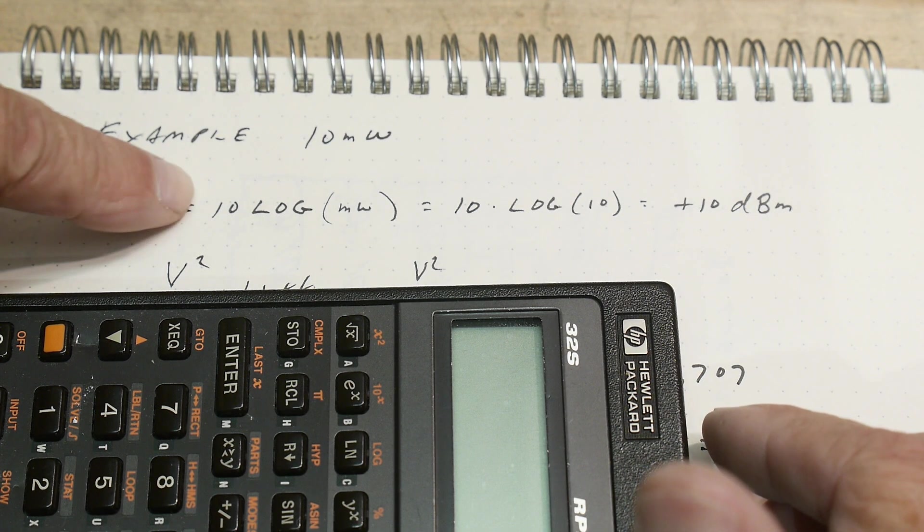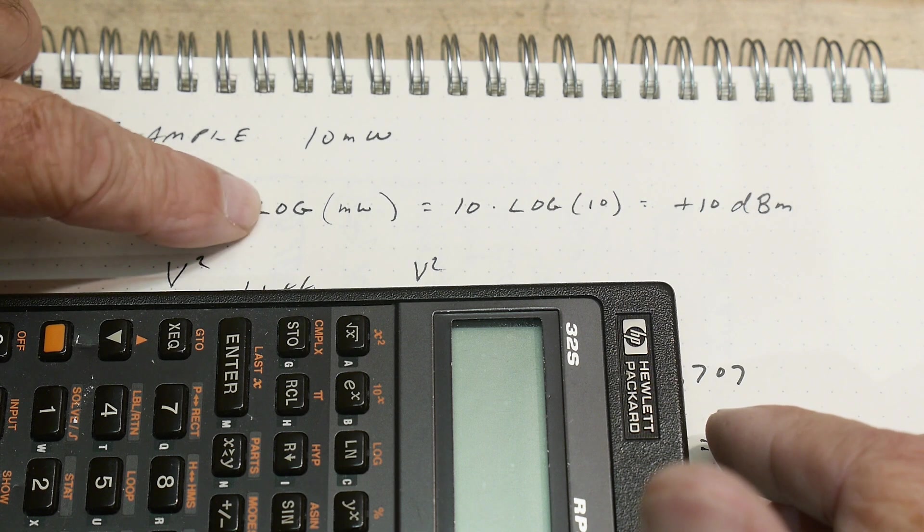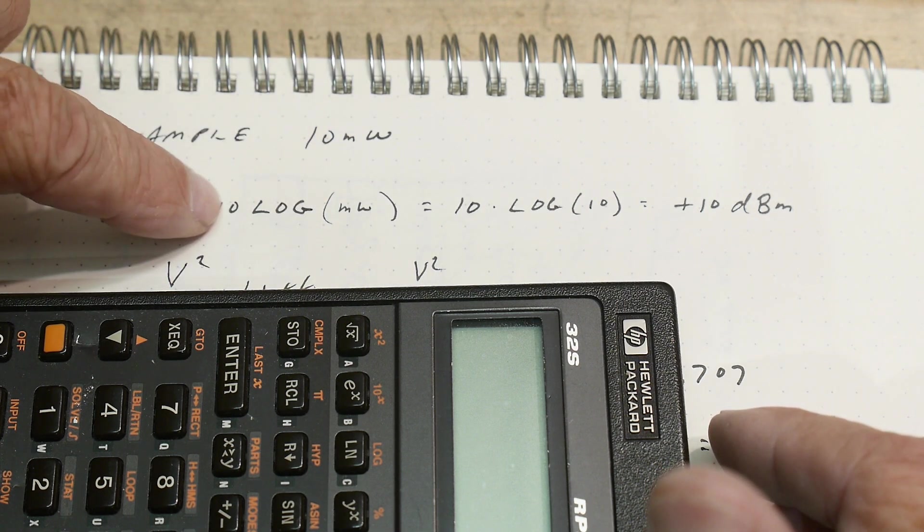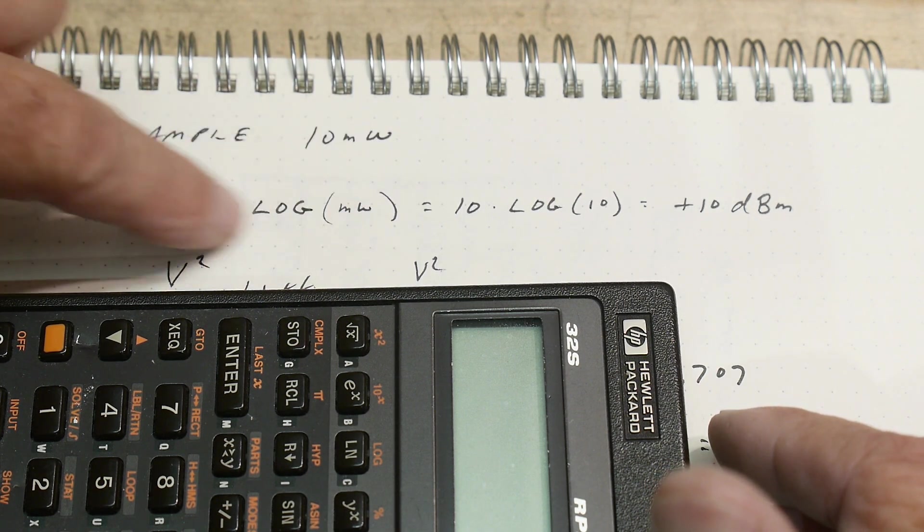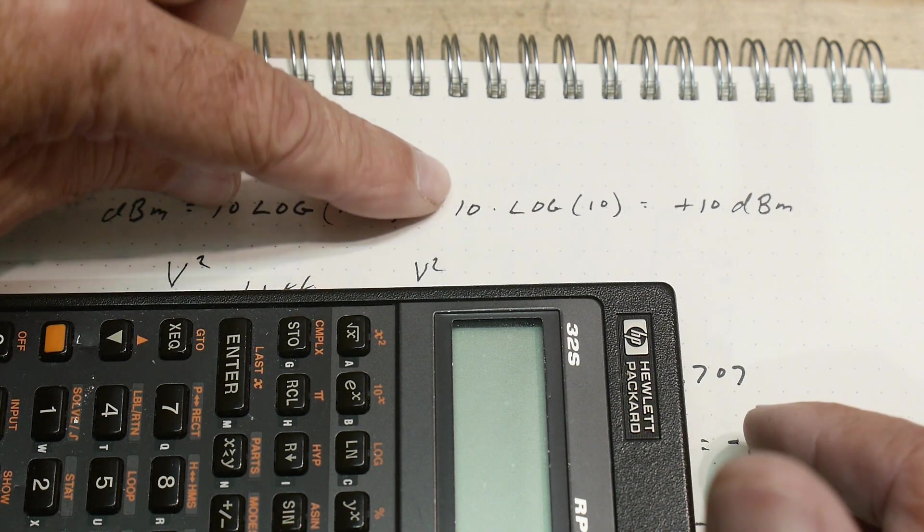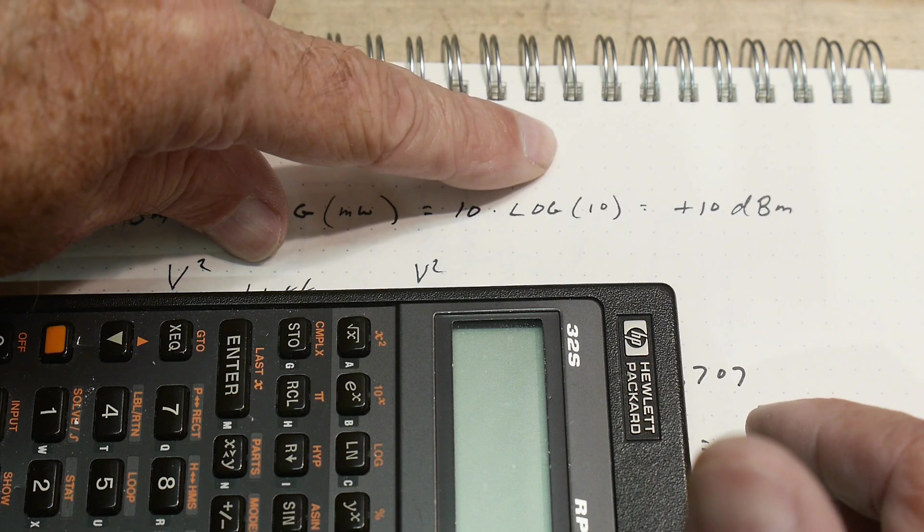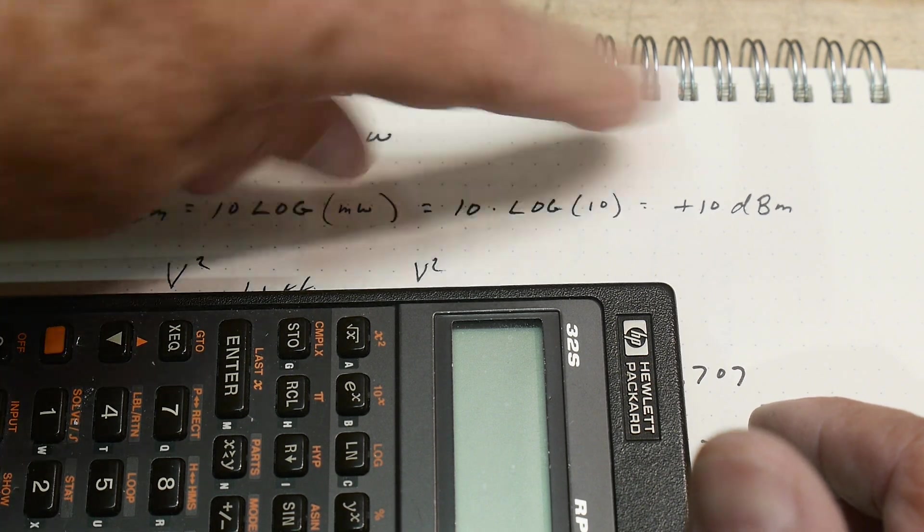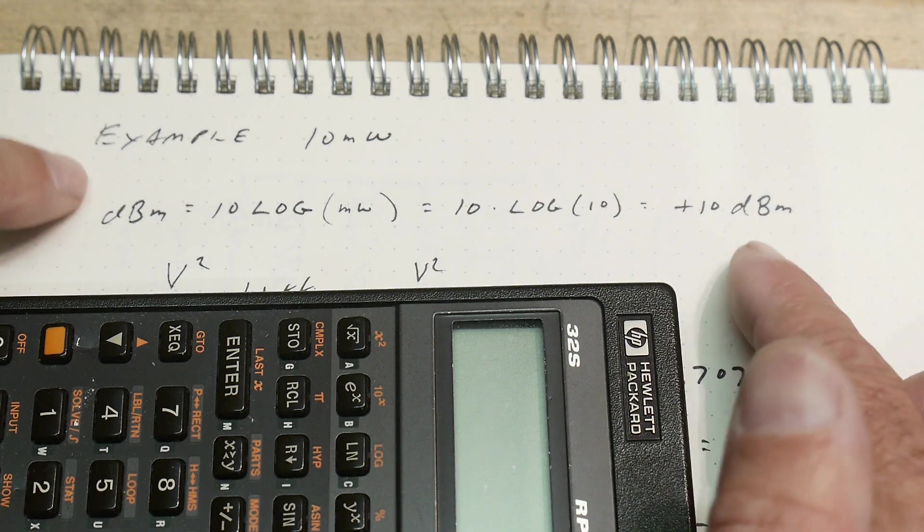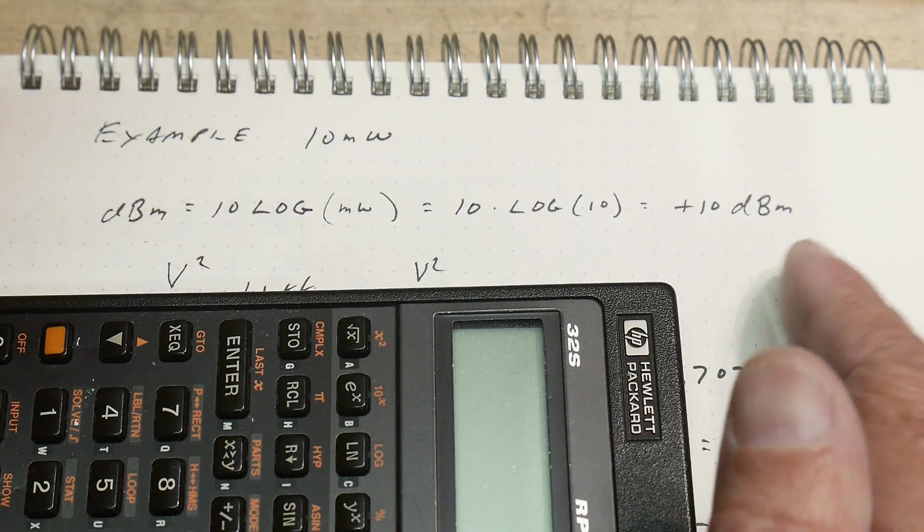So what is 10 milliwatts in dBm? Well, dBm is 10 log of the milliwatts. And so you put the 10 here and then you can calculate dBm. Put in the 10, so log of 10 is 1 times 10 is 10. So it's plus 10 dBm is 10 milliwatts.